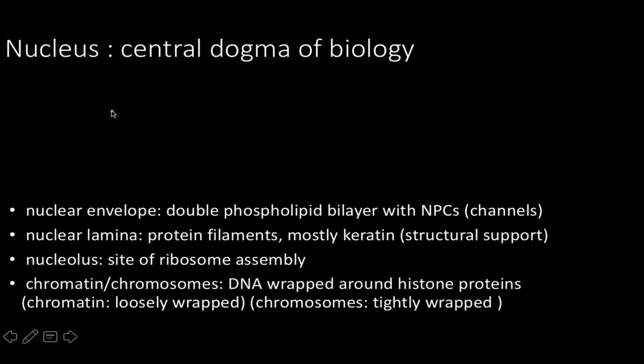Physiology is based on the concept that an organism is dependent upon its organ systems, and the organ systems are dependent upon the organs. The organs are dependent upon the tissues, and the tissue is dependent upon the cell. The cell is dependent upon the gene expression it chooses to have at that specific time — your neurons are not producing the same proteins as your skin cells. The good place to start talking about physiology is from the small to the large, and that's where I'm going to begin.